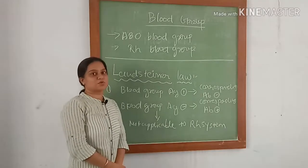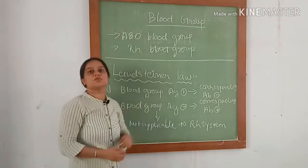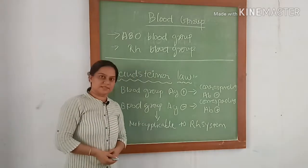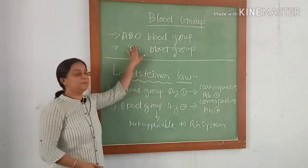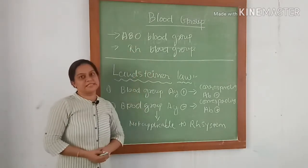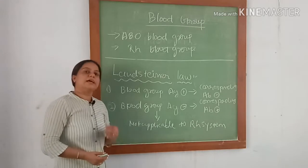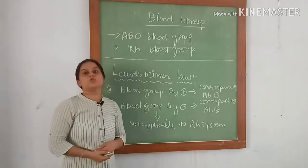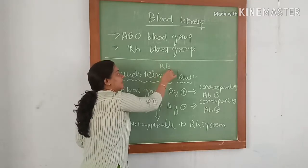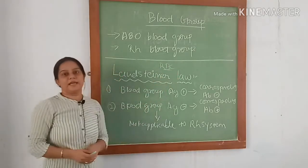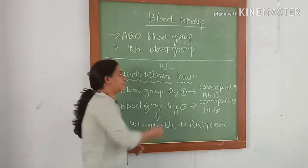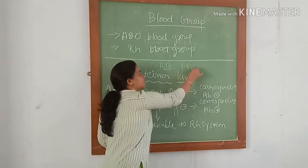Hello everyone, let us go through the physiological basis of blood group. There are various blood group systems, out of which the ABO blood group system and RH blood group system are mainly followed. Antigens or agglutinogens are present on red blood cell membranes, and antibodies or agglutinins are present in plasma.